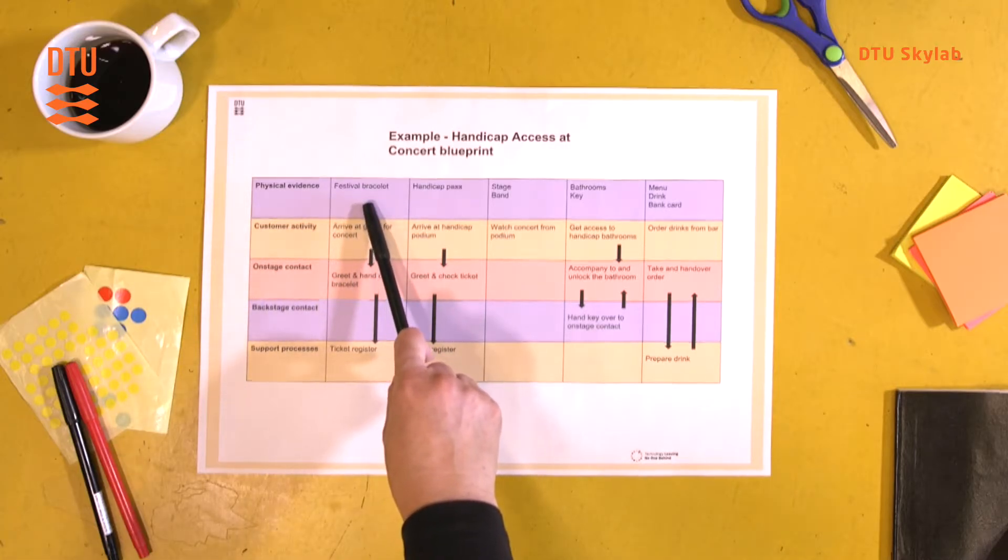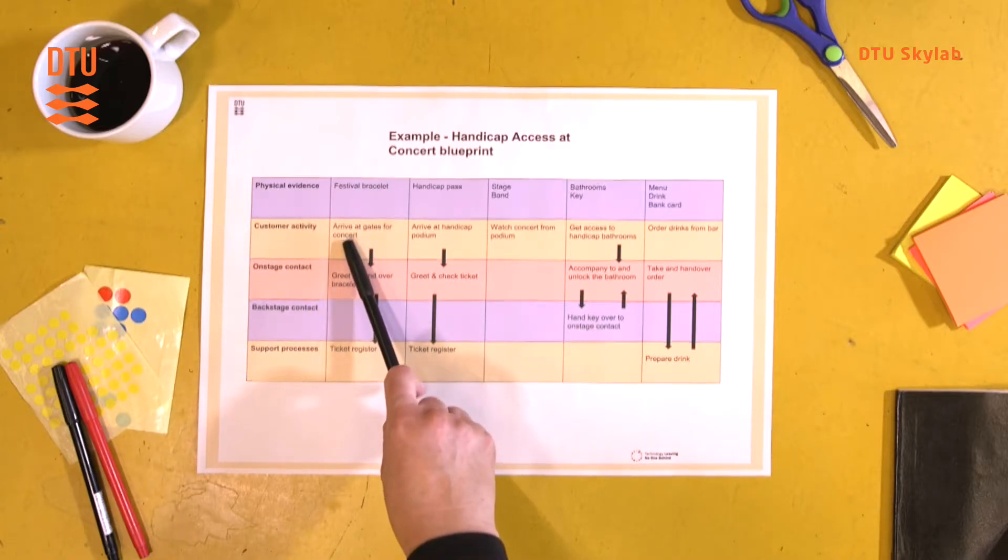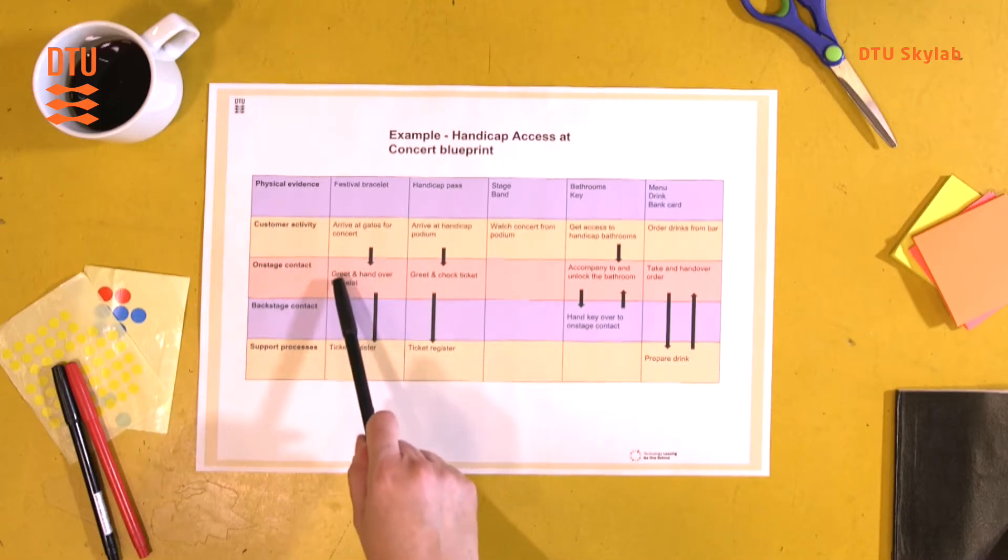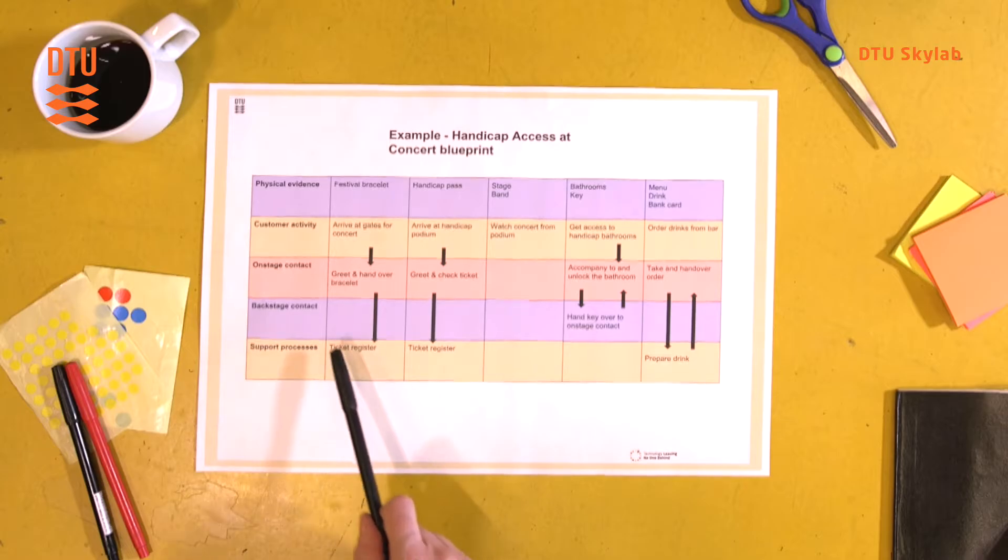The physical evidence is the festival bracelet, which corresponds to the customer activity of arriving at gates for the concert. There they are greeted and they are handed over the bracelet. For that step there's really no backstage contact. And then the support process is the ticket register.